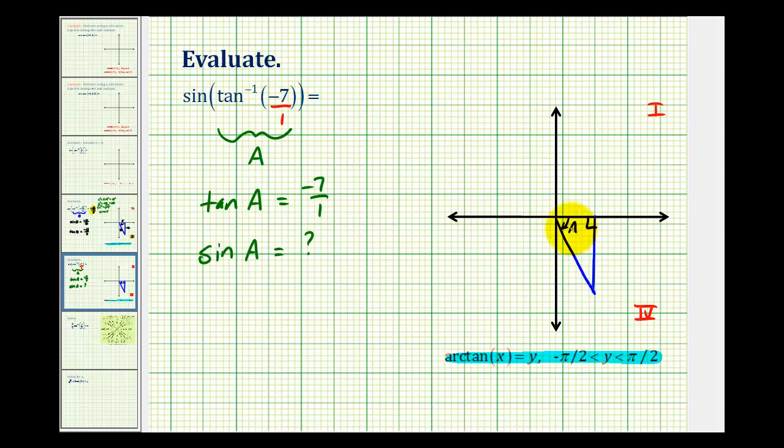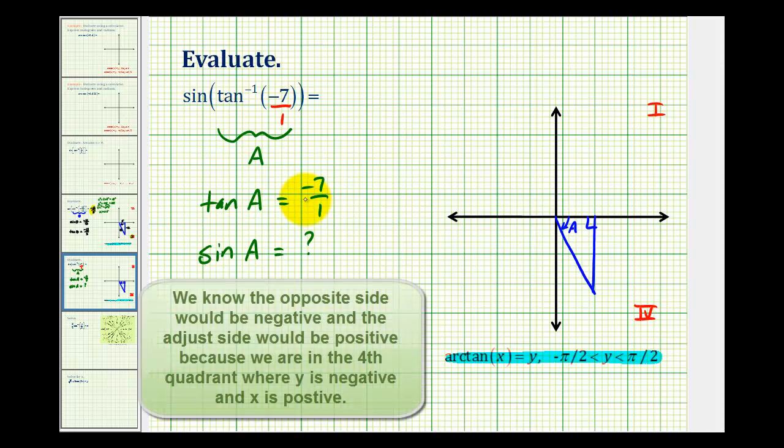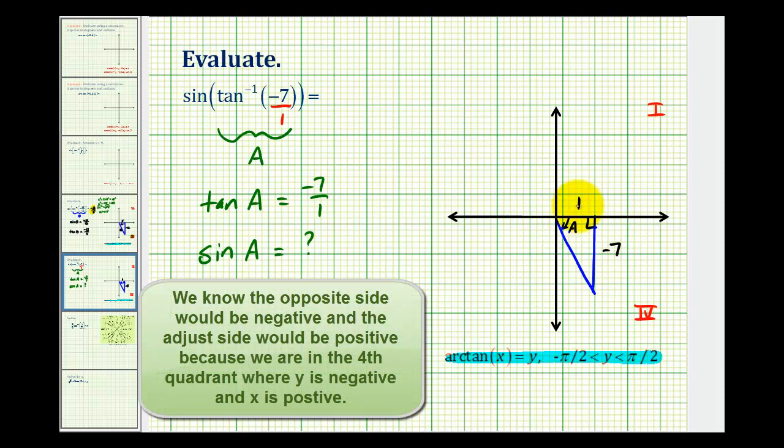So here's angle A, and the tangent of angle A is equal to negative seven over one, so we can label the opposite side negative seven and the adjacent side positive one.